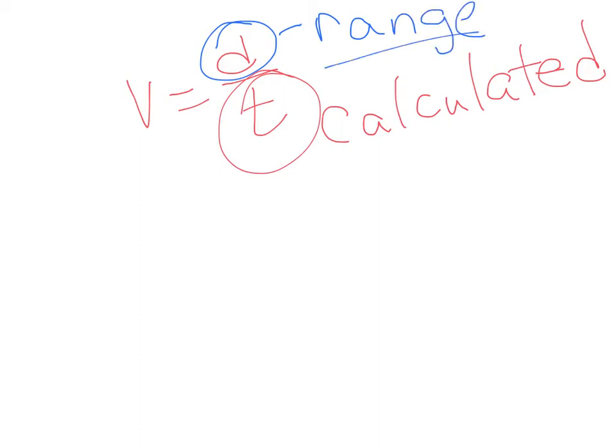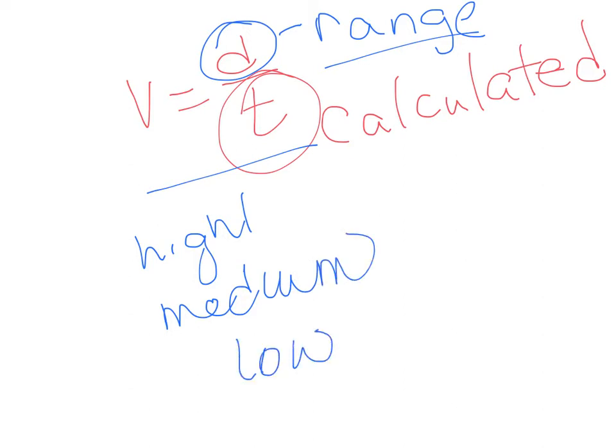The d is your range. So your velocity is going to be the range divided by your calculated time. You should have a high velocity, a medium velocity, and a low velocity because you were supposed to roll the ball with a different force.